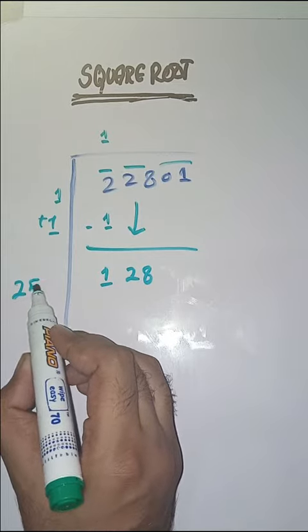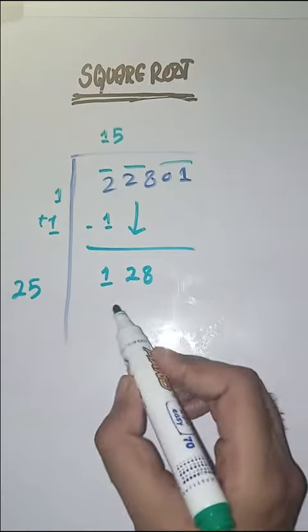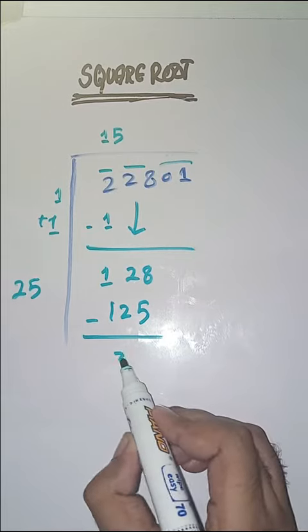Now we will take a number 5. 25 times 5 is 25. Minus karenge, result is 3.